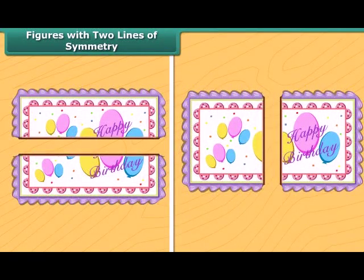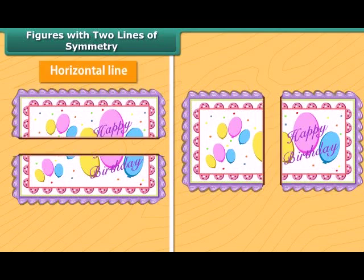The cake can be divided along the horizontal line so that its two halves match each other. It can also be divided along the vertical line. So the cake has two lines of symmetry along which it can be divided to give two identical halves. Thus we can say that a rectangle has two lines of symmetry.